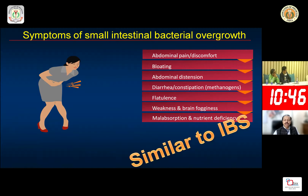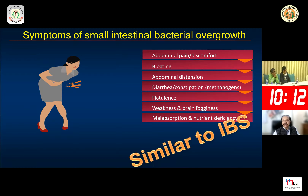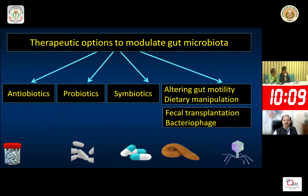Why are we talking about SIBO in IBS? Because the symptoms of bacterial overgrowth — including abdominal pain, discomfort, bloating, abdominal distension, diarrhea or constipation, flatulence, weakness, and brain fogginess — are very similar to those of IBS. So if a patient presents with these symptoms, don't assume it is only IBS; it could also be small intestinal bacterial overgrowth.